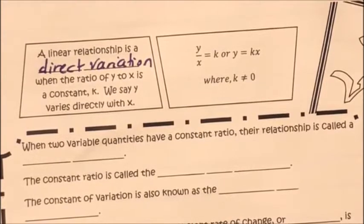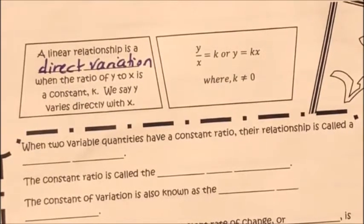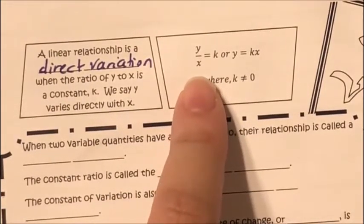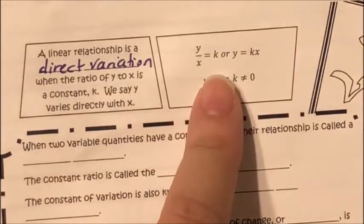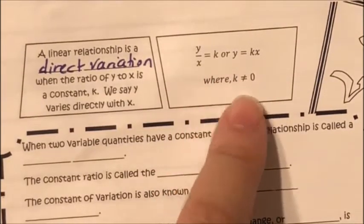Direct variation is a linear relationship — linear means line, so it forms a line. This applies when the ratio of y to x is constant, meaning they're the same. We talked about that in constant rate of change and in slope. The formula is y over x equals k, or y equals k times x, where k cannot be zero.